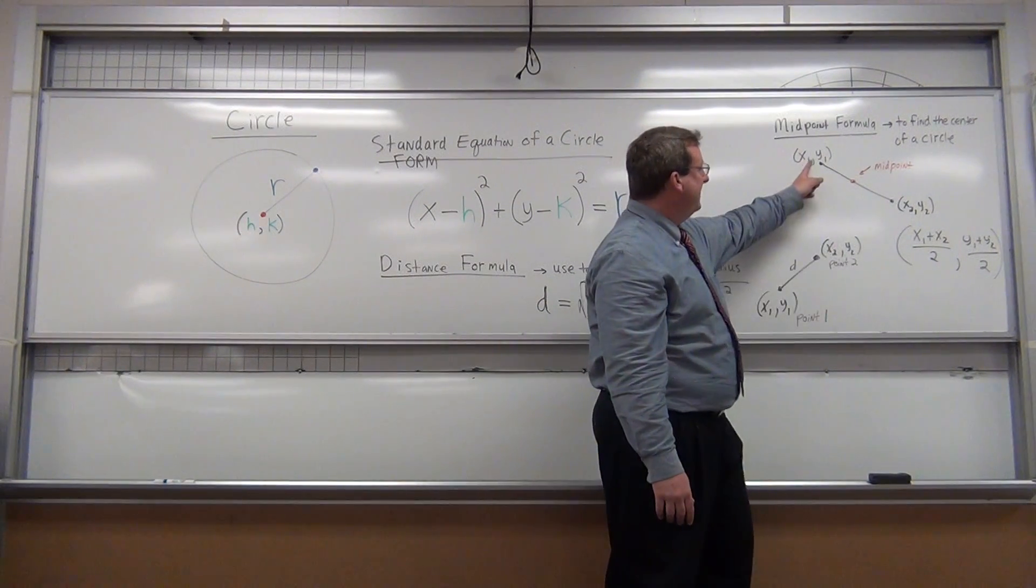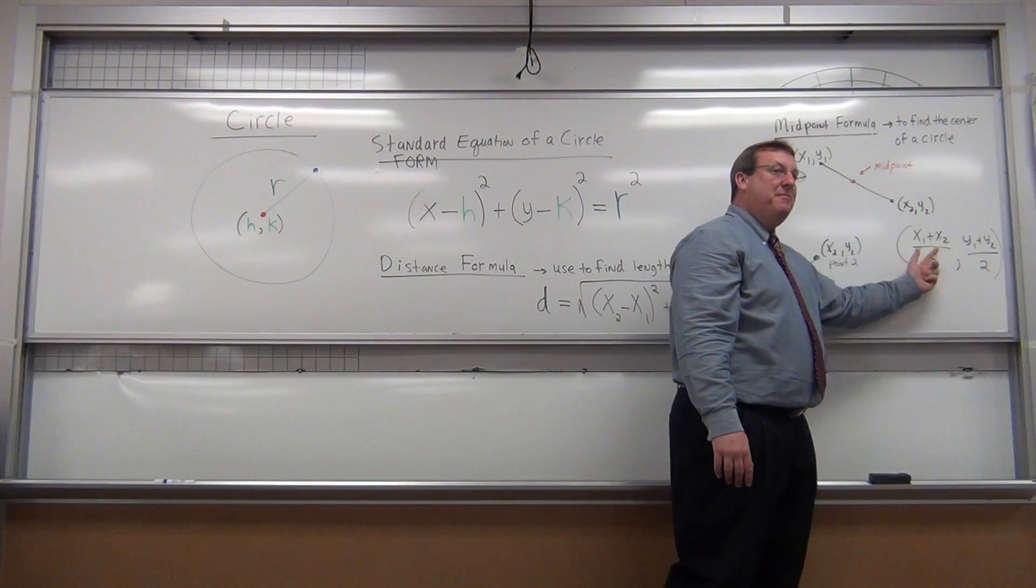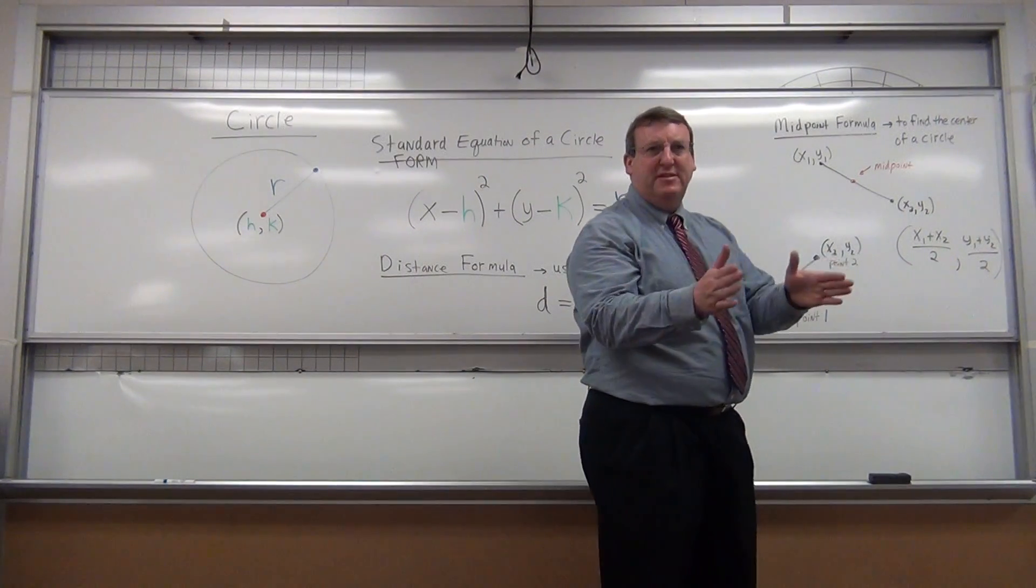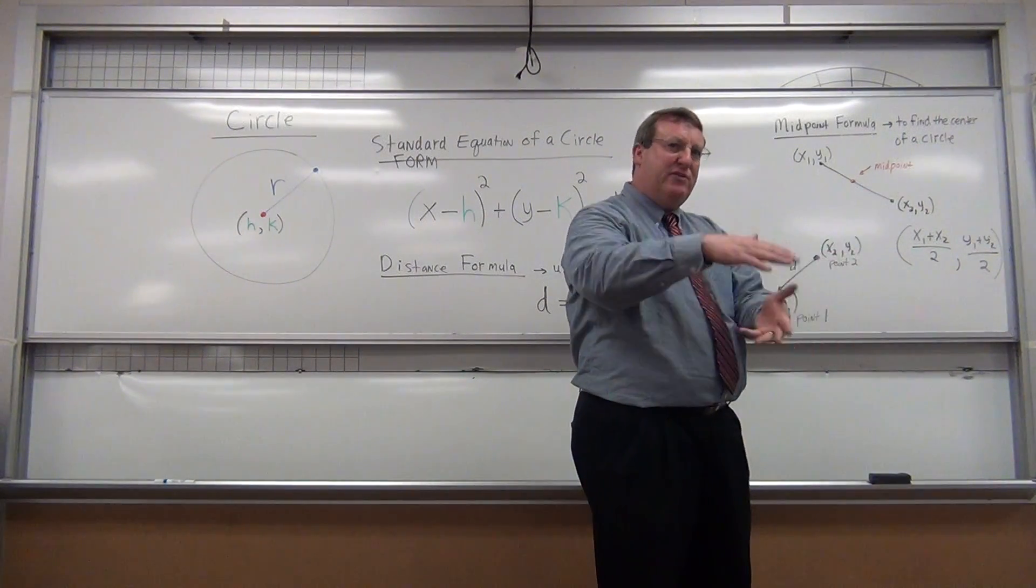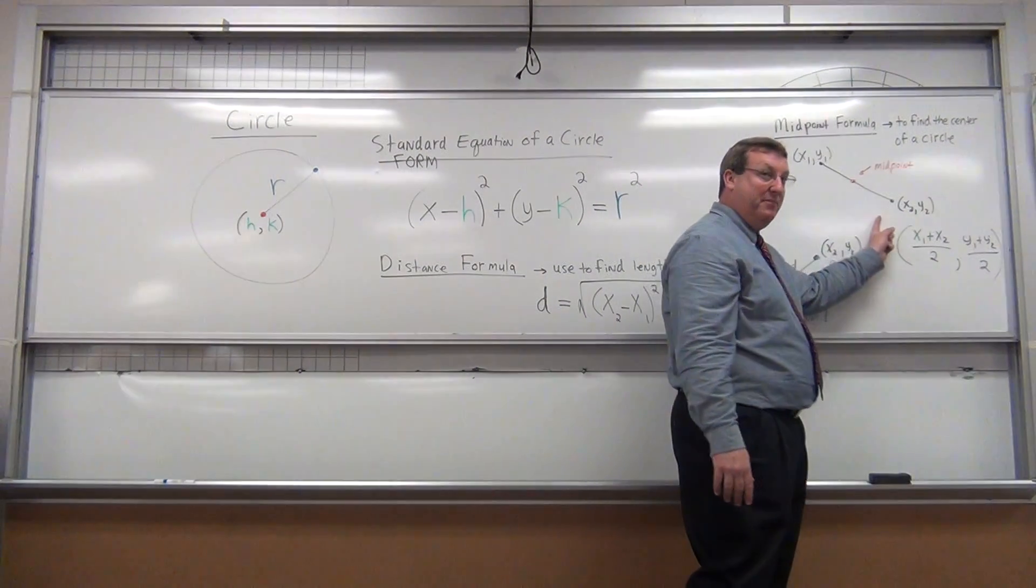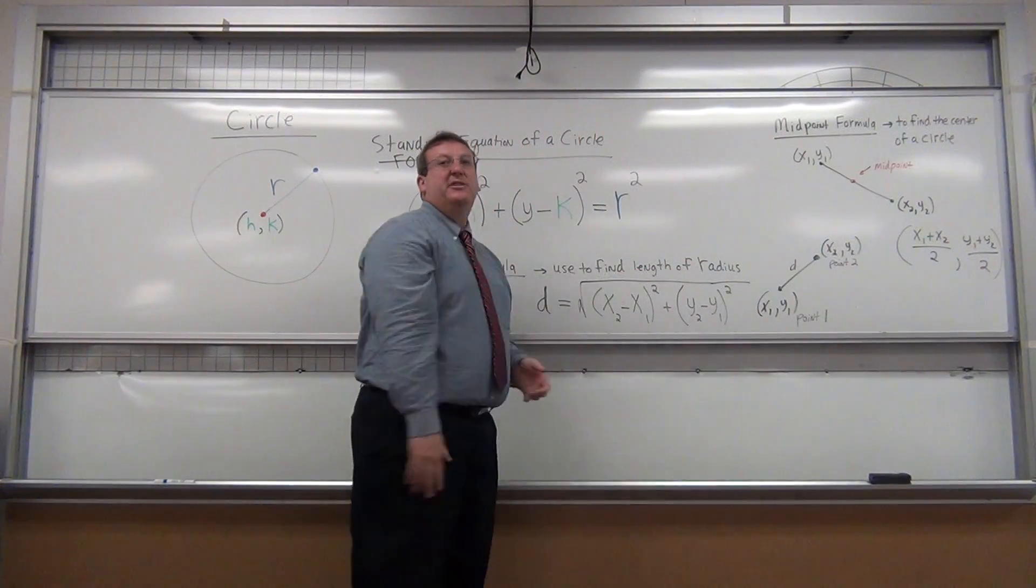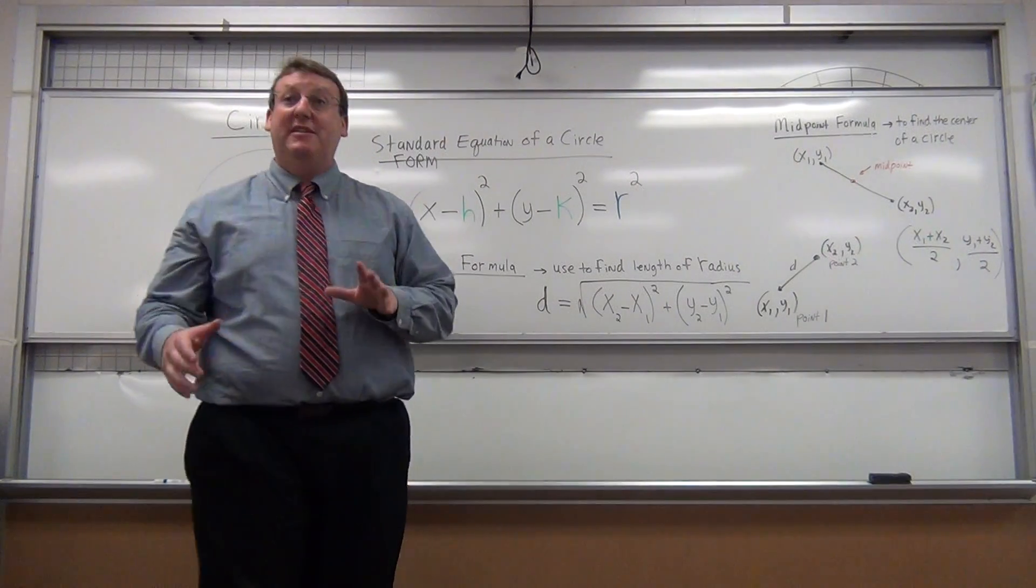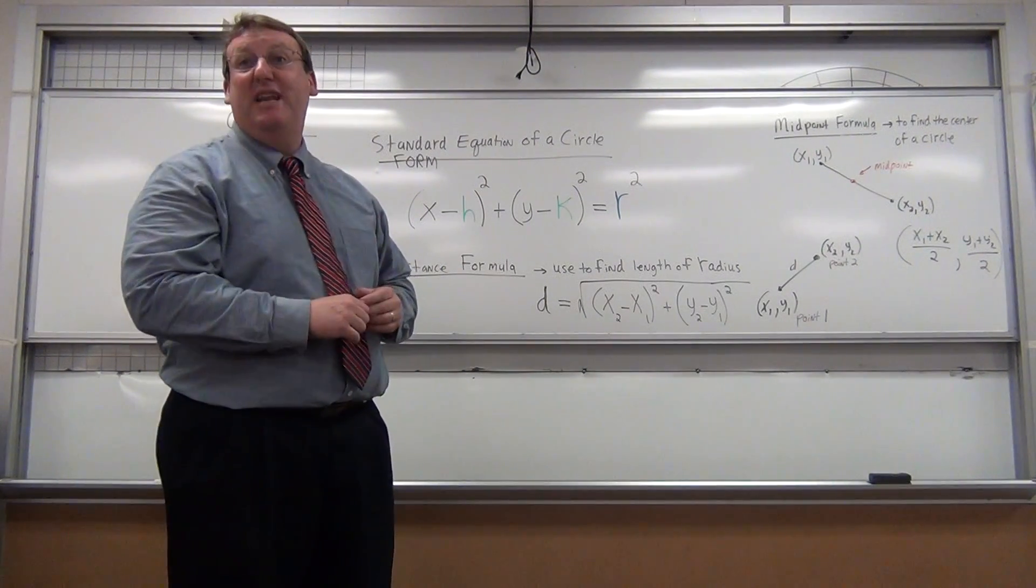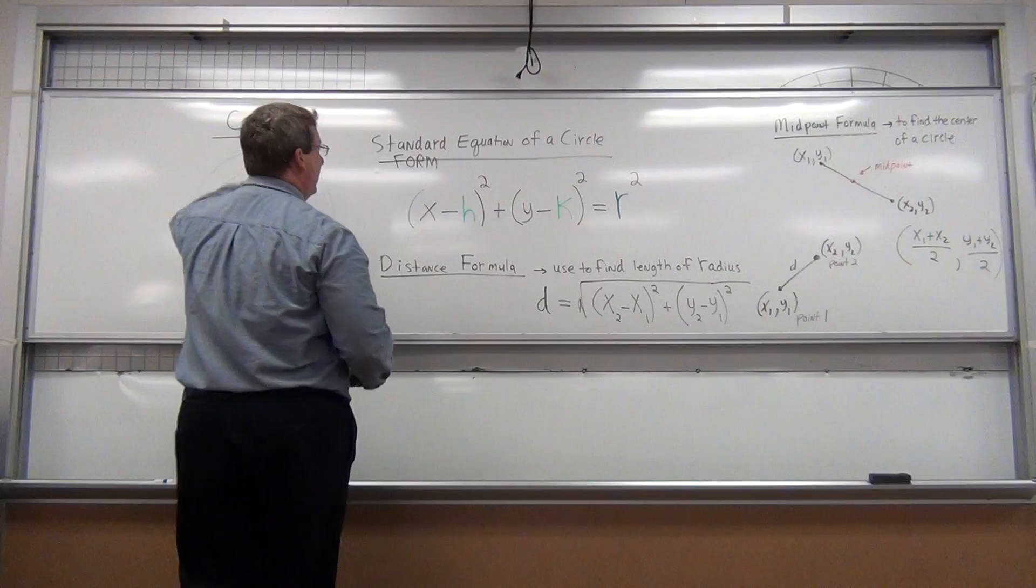Pretty simple. Take the X values, add them up, and divide by two. It's kind of like finding the average. The average X distance and the average Y distance will tell you where the midpoint is going to be. These are the formulas you're going to need to tackle a very challenging question that I'm going to pose next. So let's do it.